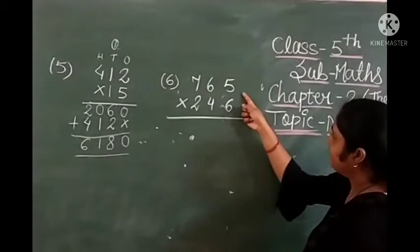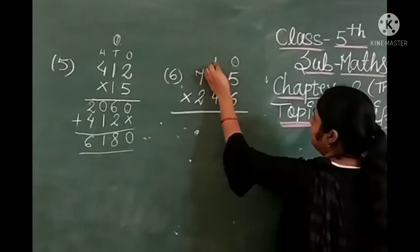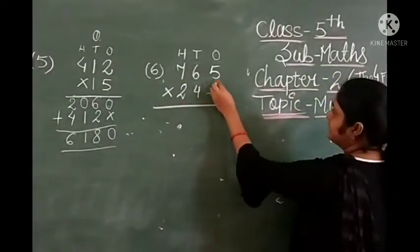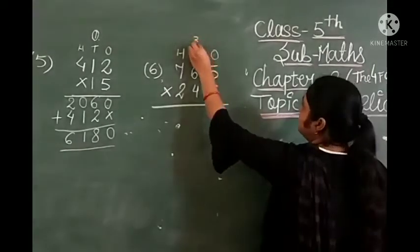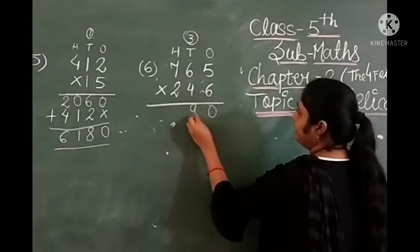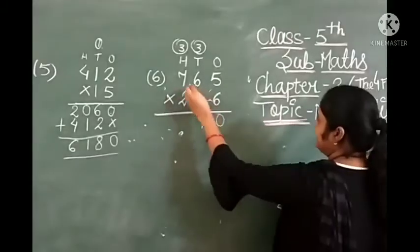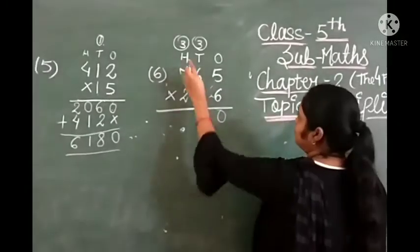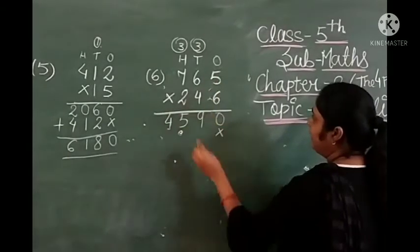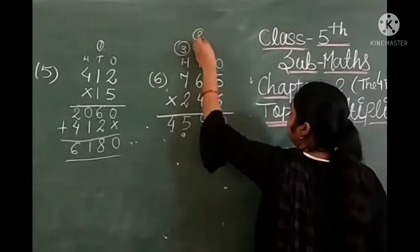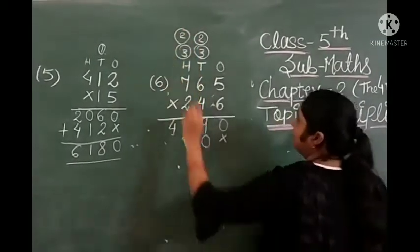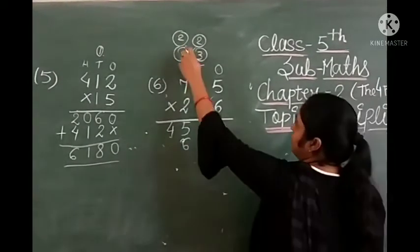Another example: 765 multiplied by 340. We have ones, tens and hundreds places. Start with ones place — 0 is the ones digit of 340. 0 times 5 is 0. Moving to tens: 4 fives are 20, write 0 carry 2. 4 sixes are 24 plus 2 is 26, write 6 carry 2. 4 sevens are 28 plus 2 is 30, write 0 carry 3. Now put a cross and start hundreds place: 3 fives are 15 plus carry, 3 sixes are 18 plus carry, 3 sevens are 21 plus carry.